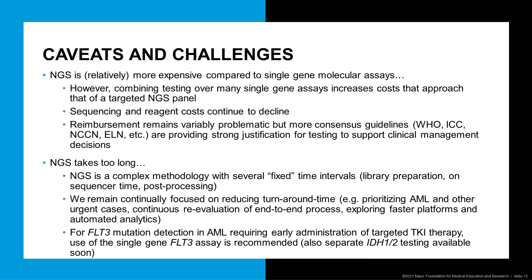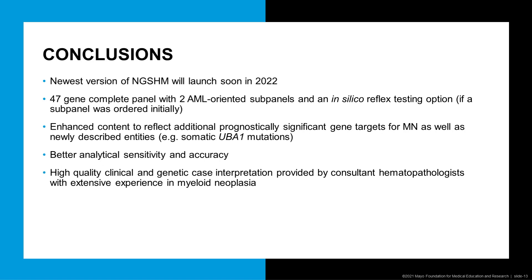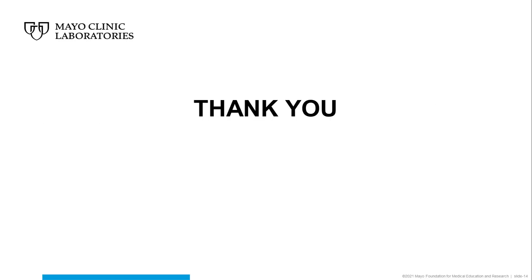In conclusion, I have presented the newest version of our NGSHM panel, which will launch later in 2022. It is a 47-gene complete panel with two small AML-oriented subpanels and a reflex testing option that can be ordered if one of the subpanels was performed initially. The enhanced content reflects a significant number of additional genes of value, including the UBA1 gene and VEXAS syndrome. This new panel has better analytical sensitivity and accuracy. We strive to provide this with the highest quality clinical and genetic interpretations from our consultant hematopathologists and genetic counselors who have extensive experience in the diagnosis of myeloid neoplasms. Thank you very much for your attention.